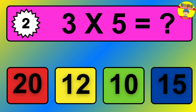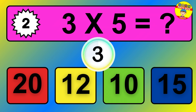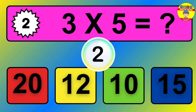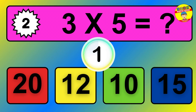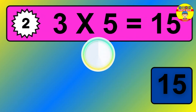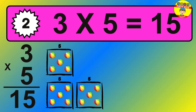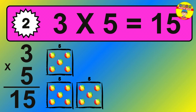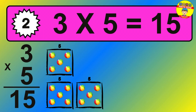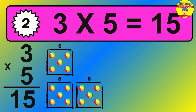Question 2. 3 times 5 equals what? The answer is 3 times 5 is 15. To calculate, we have 3 groups with 5 balls each one. So how many balls do we have? 15 balls.